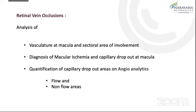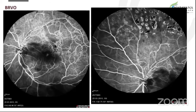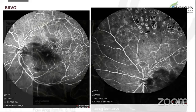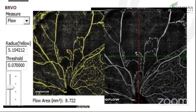Going over to retinal vein occlusions, OCTA helps us in assessing the vasculature, the macula, and also delineating the sectoral involvement. Diagnosis of macular ischemia is quite easy, which is very common in these patients, and capillary dropout as well. We can quantify using the analytical tool into flow and non-flow areas. This is a patient where you can see the area of non-perfusion on the dye-based angiography, and subsequently laser was done. Comparing with the OCTA, you can see how well the non-perfusion area is delineated in a non-invasive fashion.